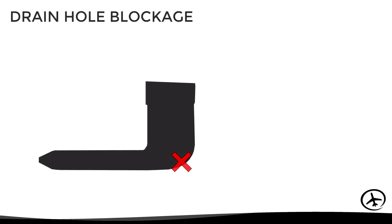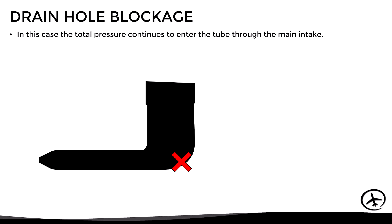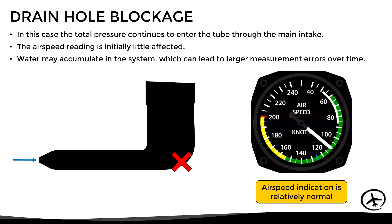In the second case, only the drain hole is blocked. Total pressure continues to enter through the main intake, so the airspeed reading will be relatively normal. However, water can accumulate inside the tube, which may lead to large measurement errors over time.